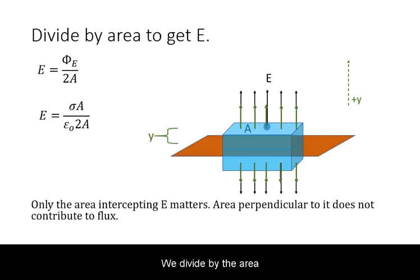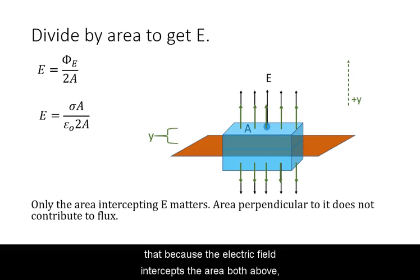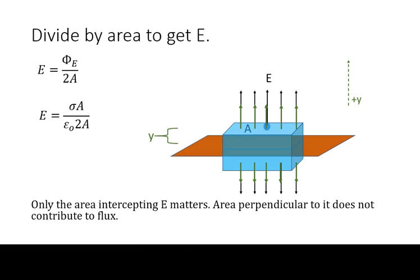We divide by the area intercepted by the electric field. Notice that because the electric field intercepts the area both above and below the charge, we need to double up the area.